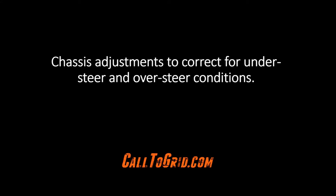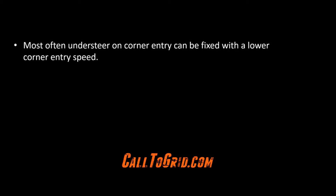In this video we will address directions for each adjustment to correct for an understeer condition or oversteer condition. This must be said right off the start: seven to eight times out of ten an understeer condition on corner entry can be fixed by adjusting the driver — specifically, for the driver to adjust his or her corner entry speed and enter the corner at a lower rate of speed.